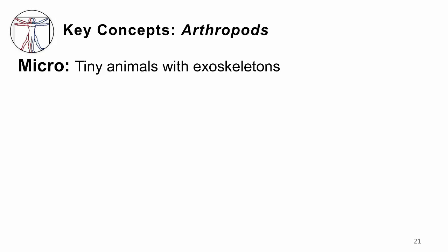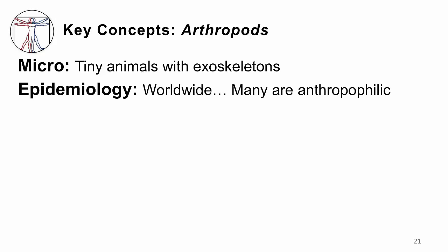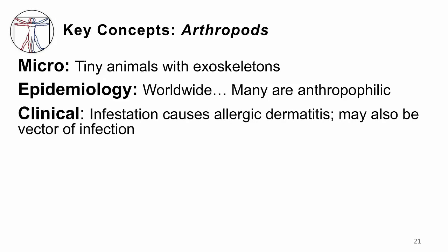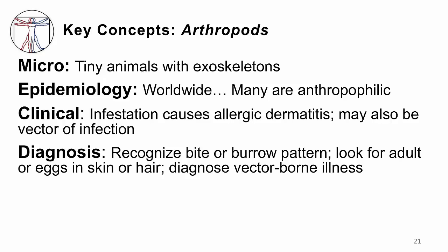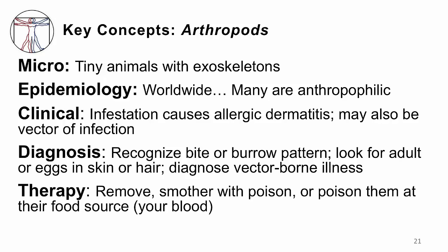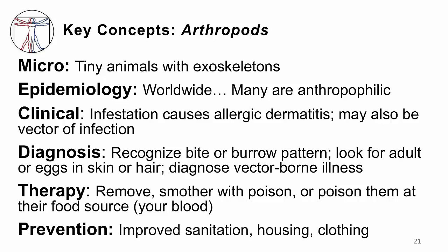The key concepts for the arthropods are that they are tiny animals with exoskeletons that happen everywhere on planet Earth. Many of them are anthropophilic, but some are adapted better for other mammals. The infestation can cause allergic dermatitis, but they may also be vectors of infections. We make a diagnosis by recognizing the bite, looking at the burrow pattern, looking for adults or eggs in the skin or hair, or just knowing that the infection you've diagnosed must have come from one of these biting arthropods. If you see one, remove it — you can smother them with topical agents or poison them at the source in their food, that's your bloodstream, by giving oral ivermectin. Prevention is all about improving sanitation and getting people better housing and clothing.